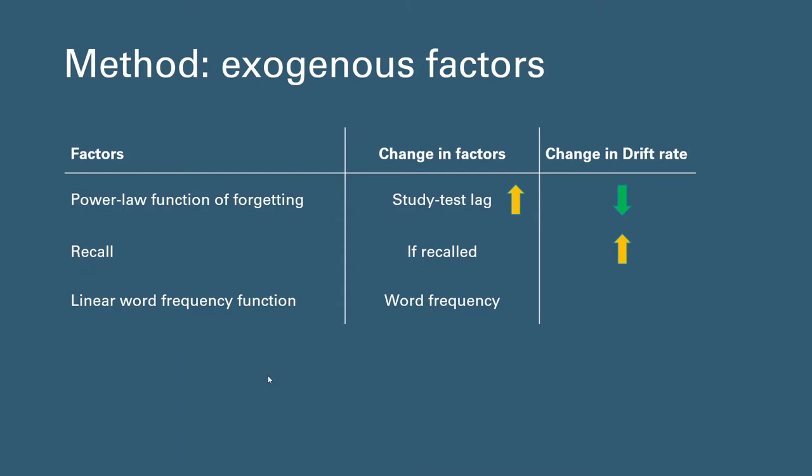Third, we also assume a linear word frequency function. High word frequency words such as dog or cat will more likely cause more confusion during recognition compared to rare words such as crocodiles. Therefore, as word frequency increases, the drift rate decreases.